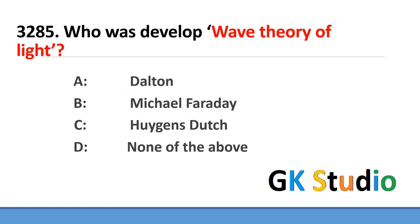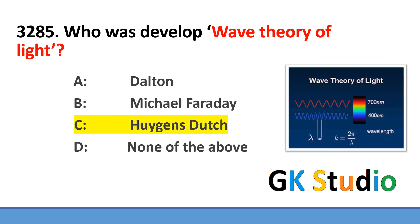To develop the wave theory of light — the Dutch scientist Huygens gave the wave theory of light.